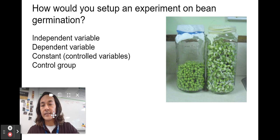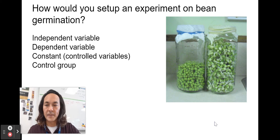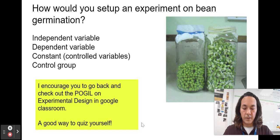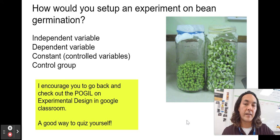This led to the development of the concept of the keystone species — a species really important to an ecosystem. Just like removing a keystone from an arch brings it crumbling down, removing the starfish caused biodiversity to dramatically decrease. We're going to do an experiment on bean germination — how would you set it up? If you're having trouble, check out the Pogel on experimental design in Google Classroom under the Experimental Design header in Classwork.